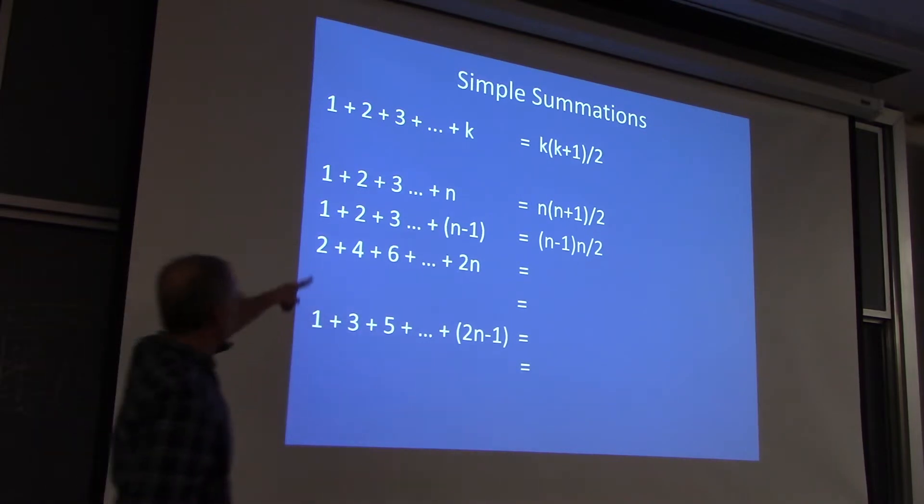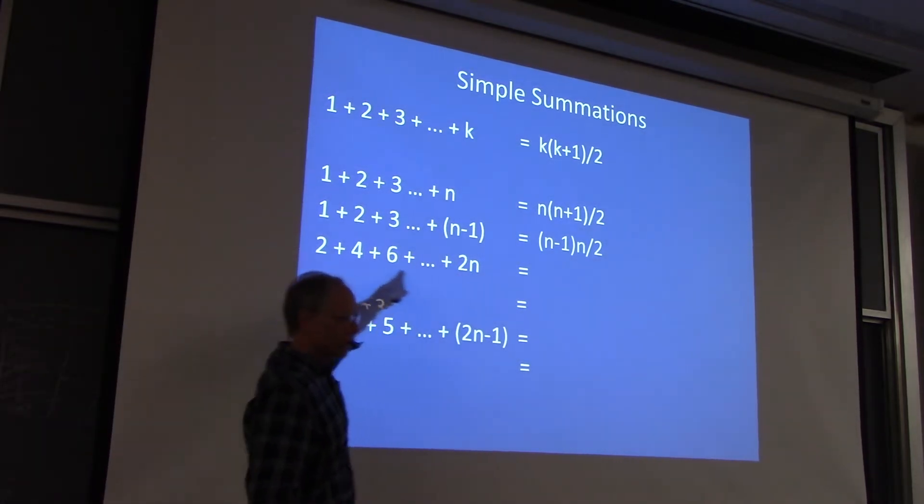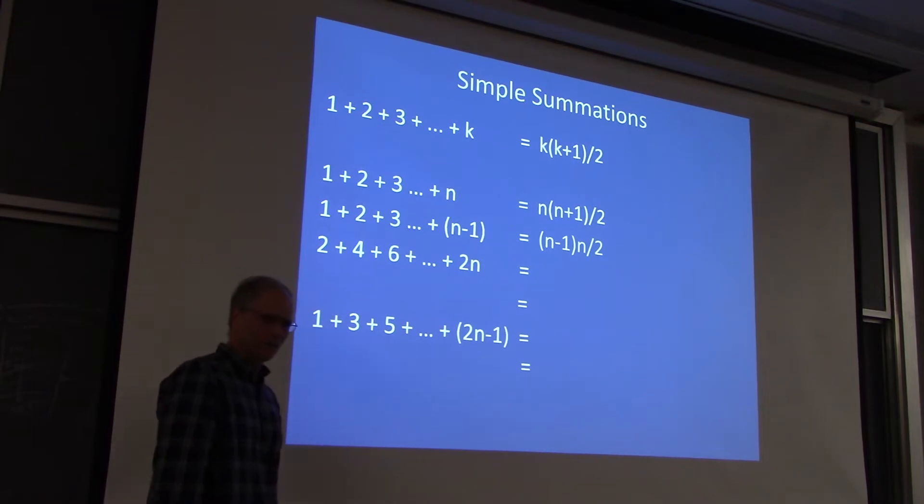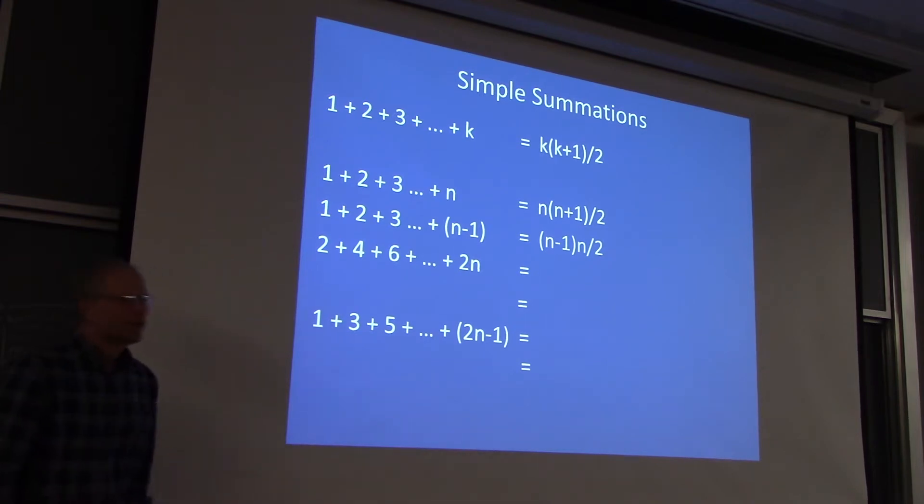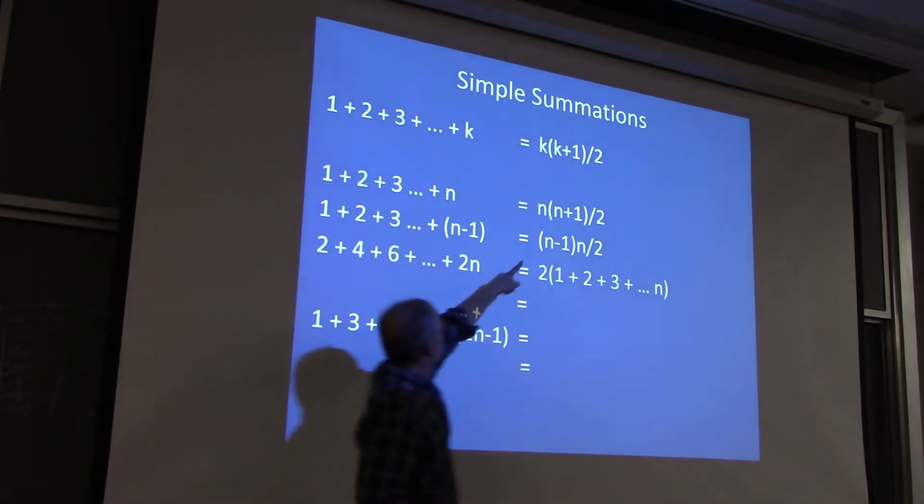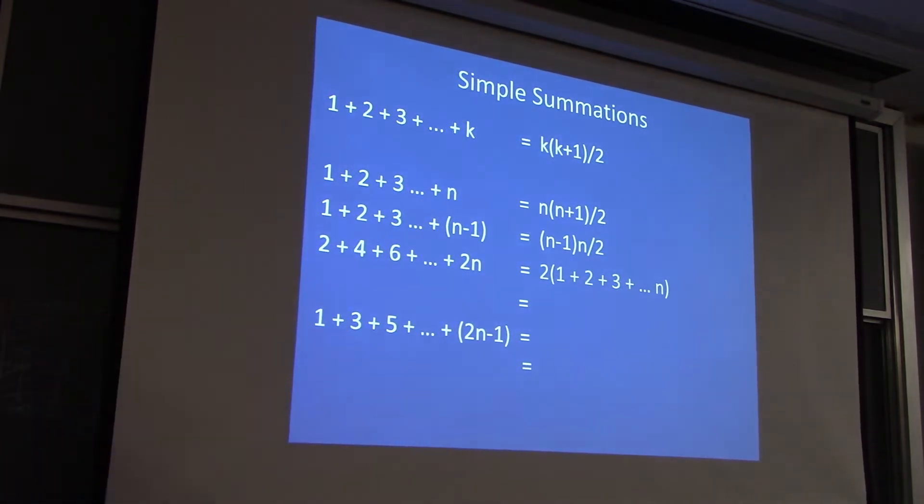What about the sum of the first n even integers? I don't want to tattoo that on my arm. What I want to do is simplify it to the thing that's tattooed on my arm. So what's the trick here? Yeah, just factor out the 2. And now we know how to deal with that inner formula. So it's 2 times, so it's n times n plus 1.